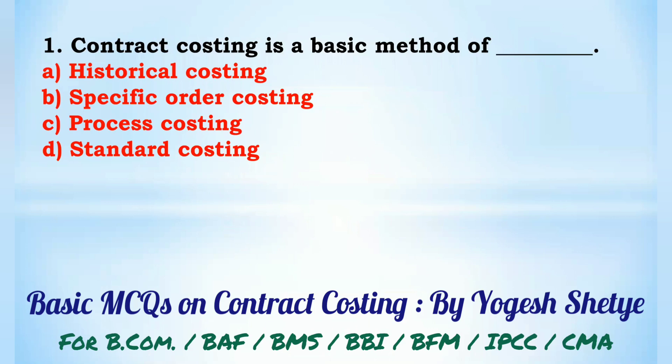Question 1: Contract costing is a basic method of — (A) historical costing, (B) specific order costing, (C) process costing, (D) scanner costing. Contract costing is a basic method of specific order costing. Answer: B.